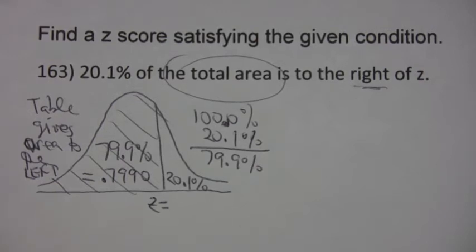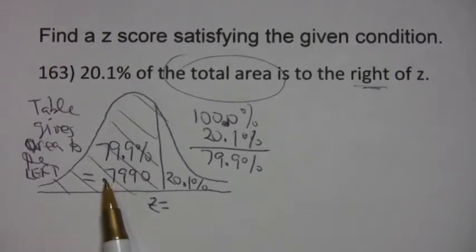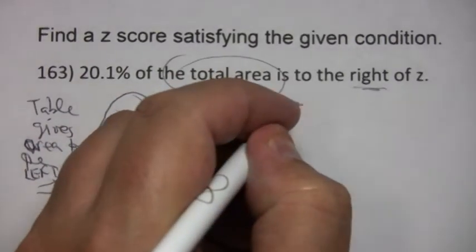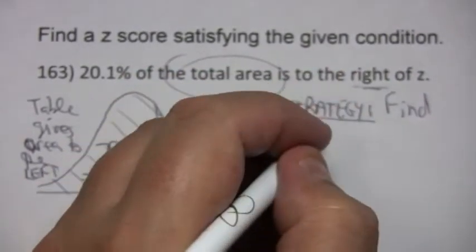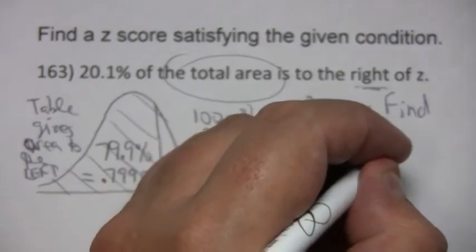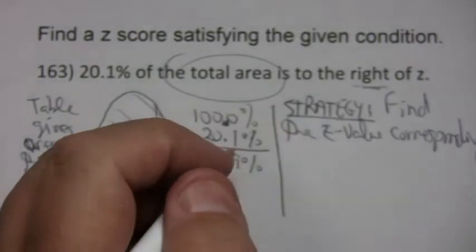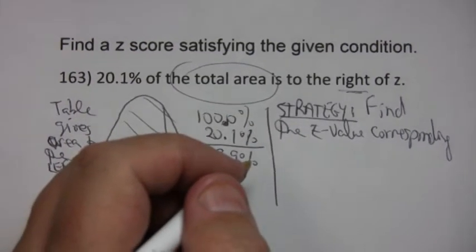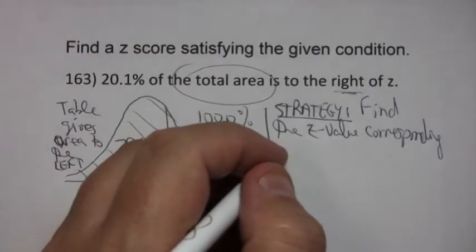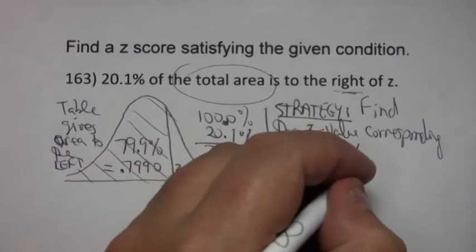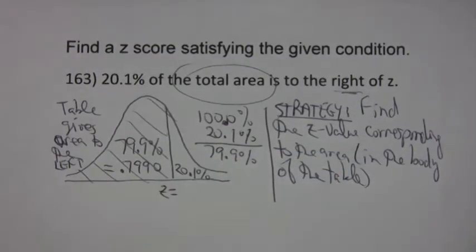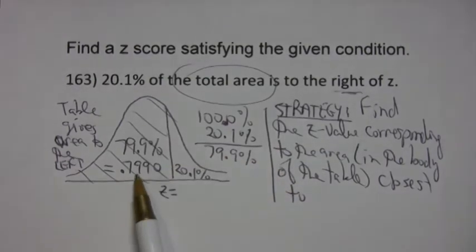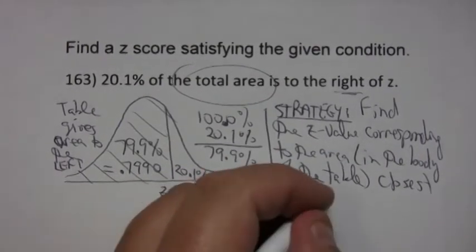Okay, once I've got that, I'm home free. I want to find the z value that corresponds to that area right there in the body of the table. My strategy is to find the z value corresponding to the area which is in the body of the table, but I want it to correspond to the area closest to this number right here, 0.7990.